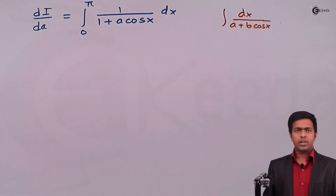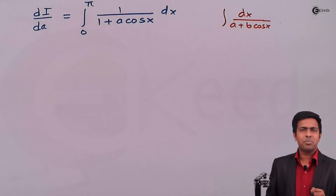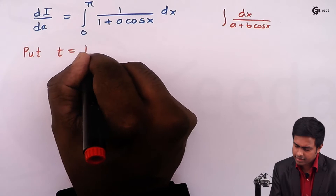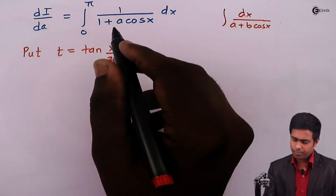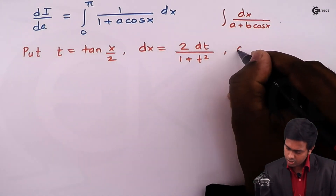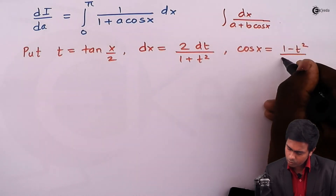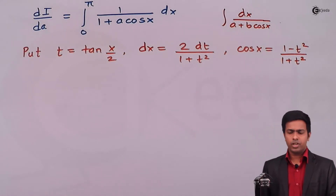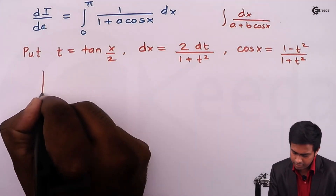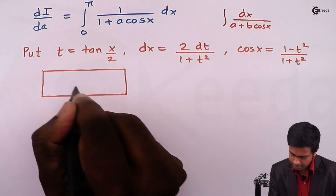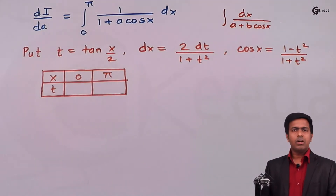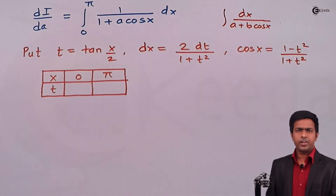In this method, we substitute t = tan(x/2), which gives dx = 2dt/(1 + t²) and cos x = (1 − t²)/(1 + t²). These are the substitutions we'll use. We also need to find the new limits for t. Let's draw the table: when x = 0, t = tan(0/2) = tan(0) = 0; when x = π, t = tan(π/2) = ∞. So the limits for t are 0 to ∞.